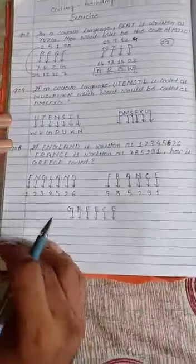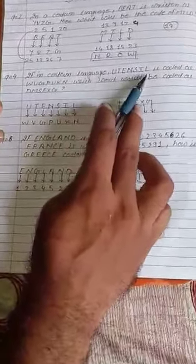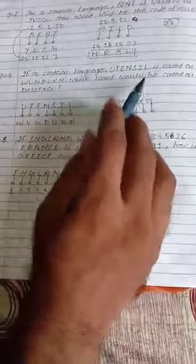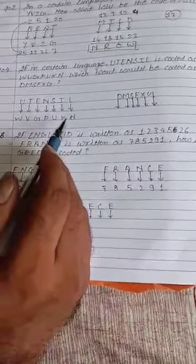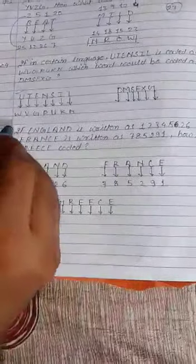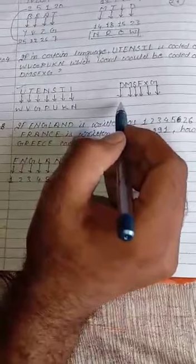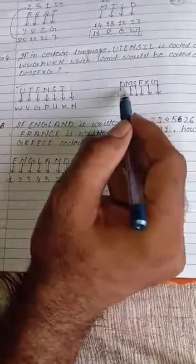Now come to the next question. In a certain language, UTENSIL is coded as WVGPUKN. Which word would be coded as DMSFXG? We'll have to find what will be the coded form for the given alphabet DMSFXG. Again, we'll go through with the position of alphabets.